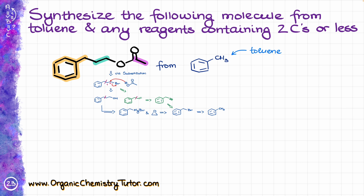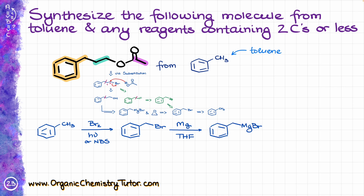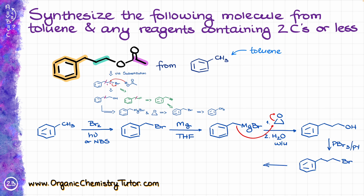The blue method starts with radical halogenation of toluene — using bromine and light, NBS and a radical initiator, or similar — to make the corresponding benzyl bromide. Then we convert it to the Grignard reagent using magnesium in THF or ether, giving us benzylmagnesium bromide, which we treat with an epoxide. This epoxide opening with a strong nucleophile, after acidic workup, gives the alcohol, which we convert to the bromide with PBr3 in pyridine. Finally, we react that with sodium or potassium acetate via SN2 to give our target molecule.